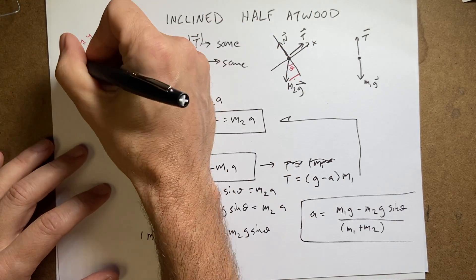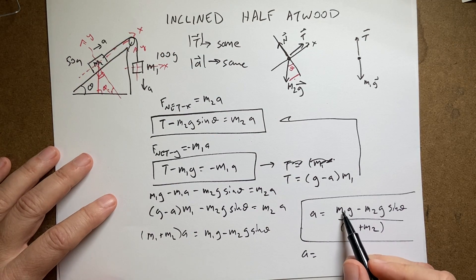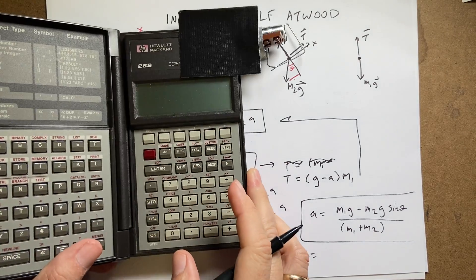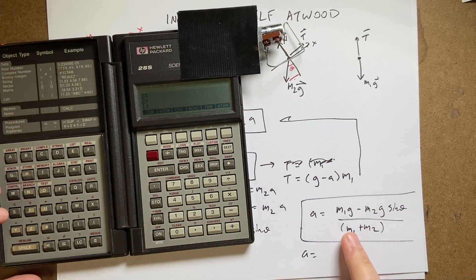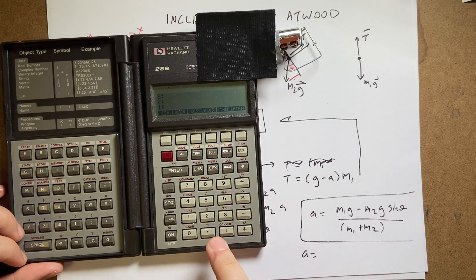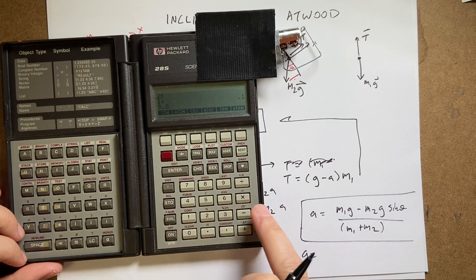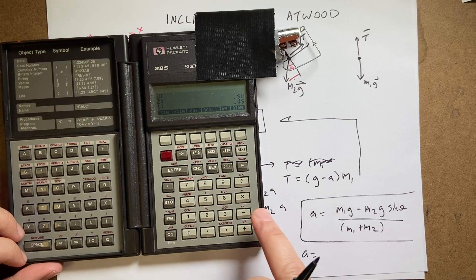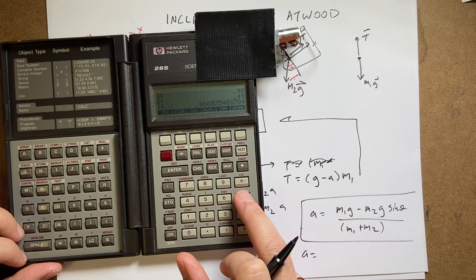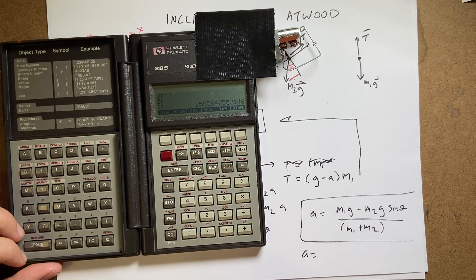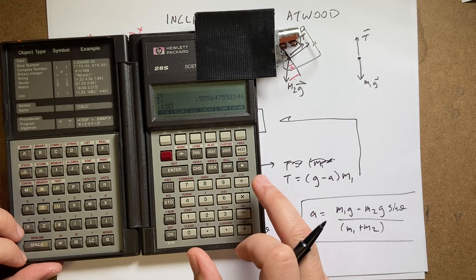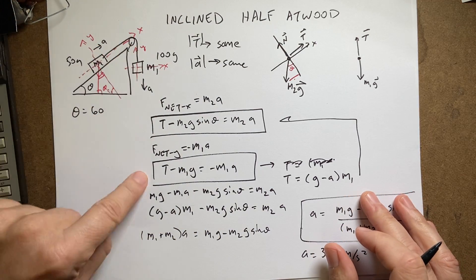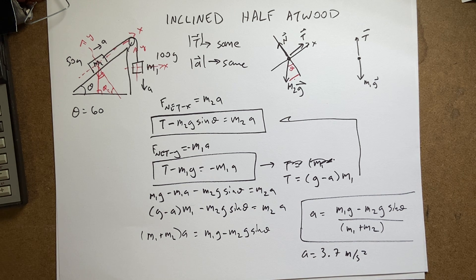I've been using M₁ = 100 g and M₂ = 50 g, and I'll pick θ = 60°. Plugging in: numerator is (0.1)(9.8) − (0.05)(9.8)(sin 60°), denominator is 0.1 + 0.05 = 0.15. I get approximately 3.7 meters per second squared. The positive result confirms the system accelerates in the assumed direction — mass 1 downward.